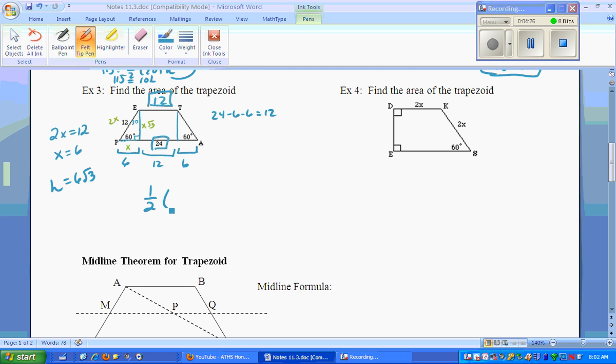Put it all together. We've got 1 half. Base 1 is 12 plus base 2 is 24 times the height of 6 root 3. Multiply it all together. Simplify it. 108 root 3. And once again, we'll put units squared since there's nothing.